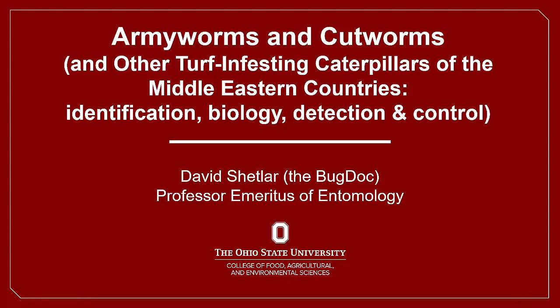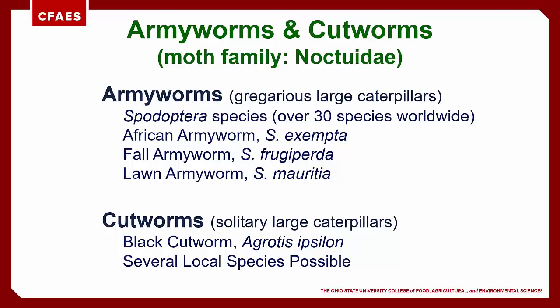In this presentation I want to cover the turf infesting caterpillars that commonly attack managed turf grass in the Middle Eastern countries. Caterpillars are the larvae of various moths and butterflies. The major large caterpillars that use grasses as foods are the armyworms and cutworms.